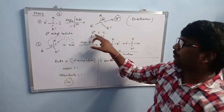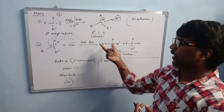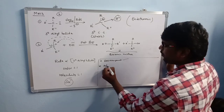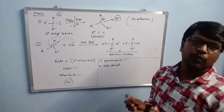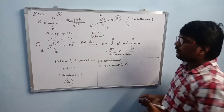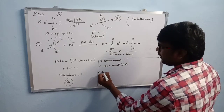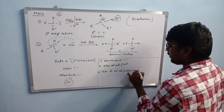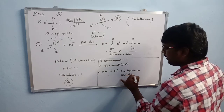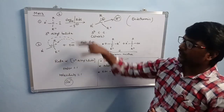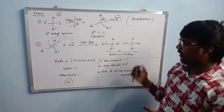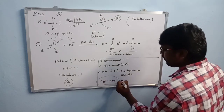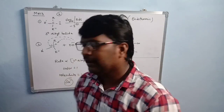If primary or secondary carbocations are formed in the first step, they rearrange to the more stable tertiary carbocations. That's why rearrangement takes place in SN1 reactions. These reactions are favorable in polar solvents — for example, water. The rate of SN1 reaction is independent of the nucleophile, because the rate depends only on the tertiary alkyl halide concentration. Also, vinyl halides do not participate in SN1 reactions.